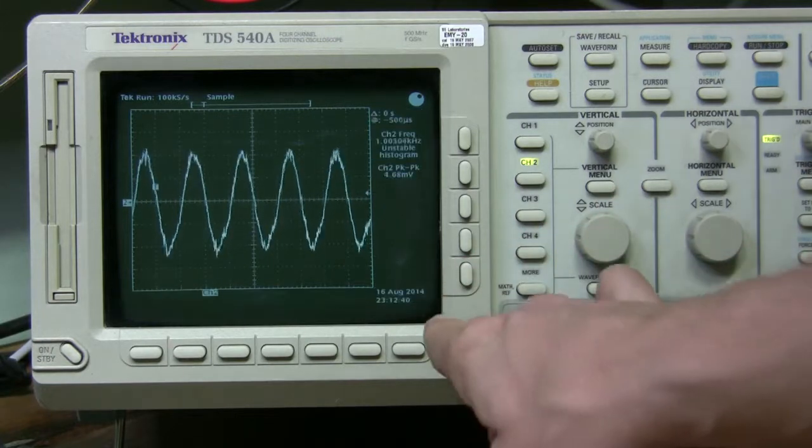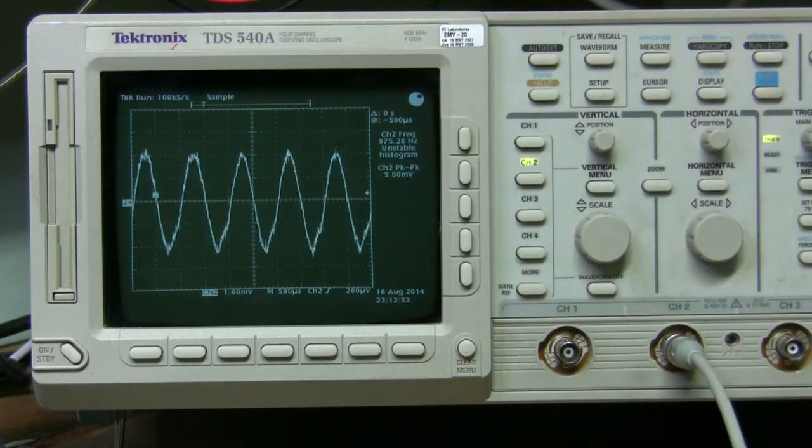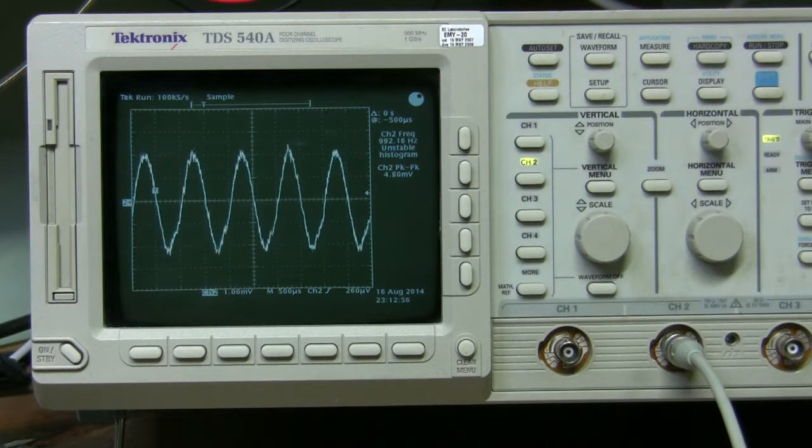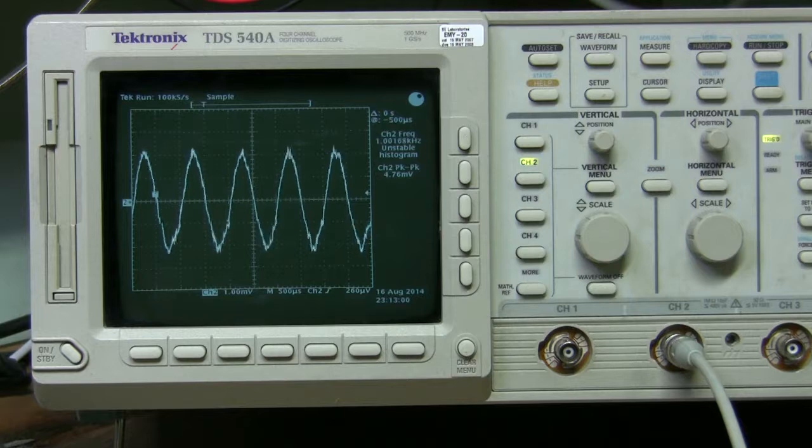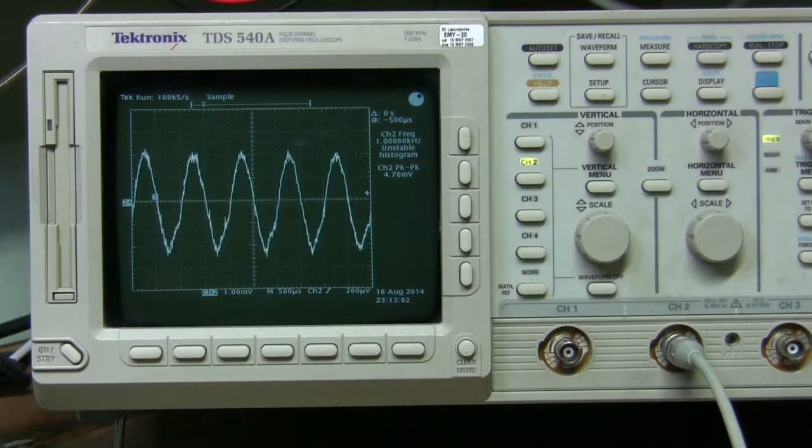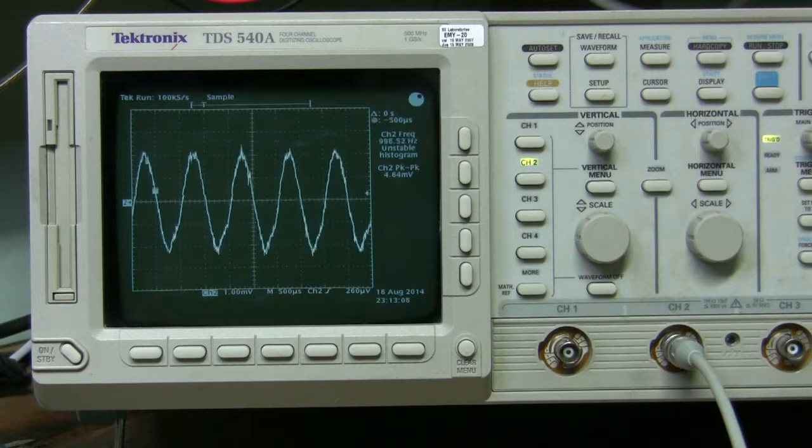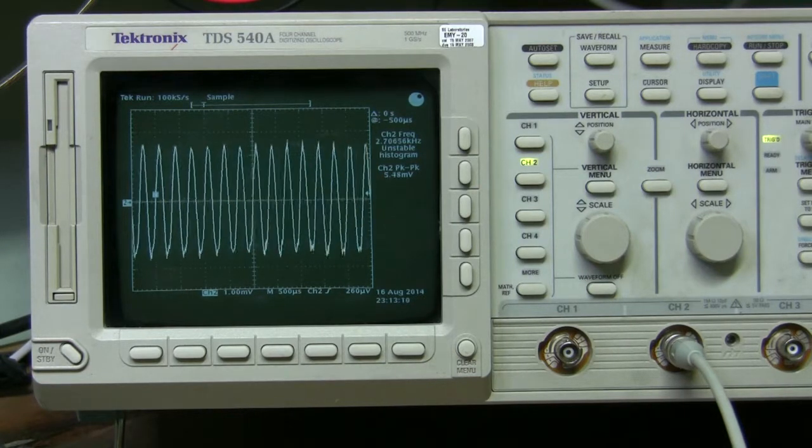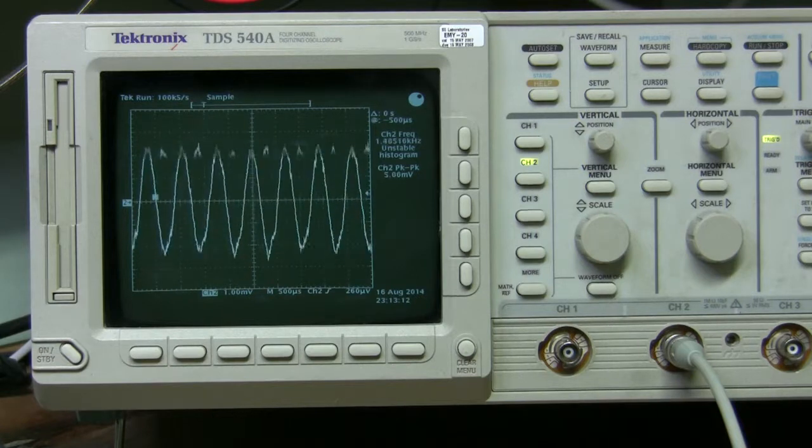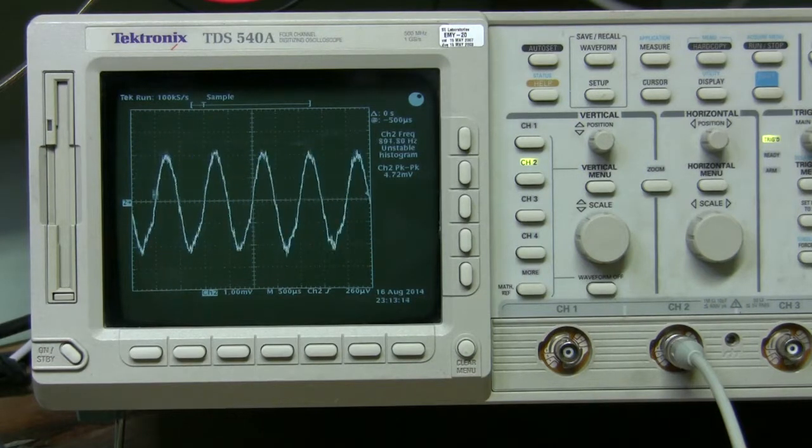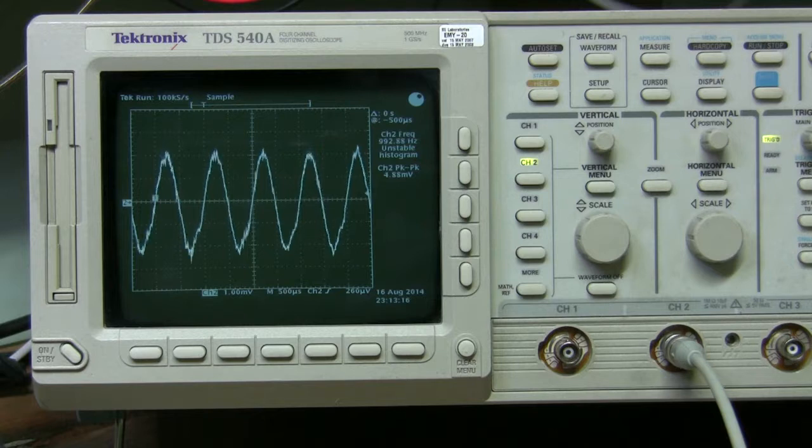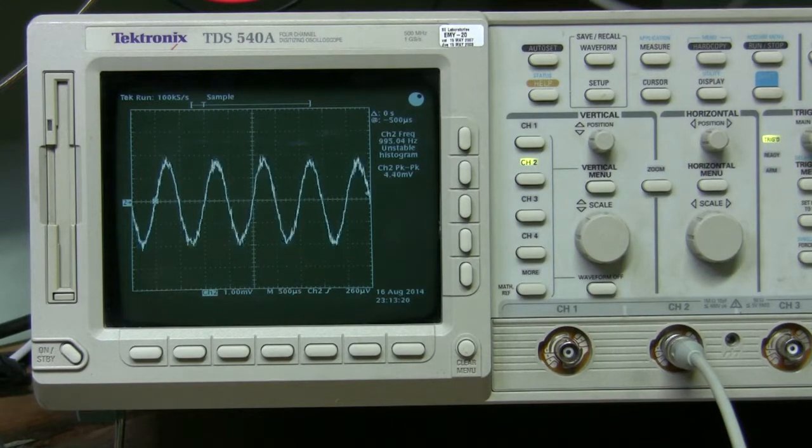Then I see some signal. However, for that I needed to crank up the amplitude on the function gen all the way to 10 volts peak to peak. And here I try to adjust the frequency, so frequency adjustment works. And amplitude adjustment works too.